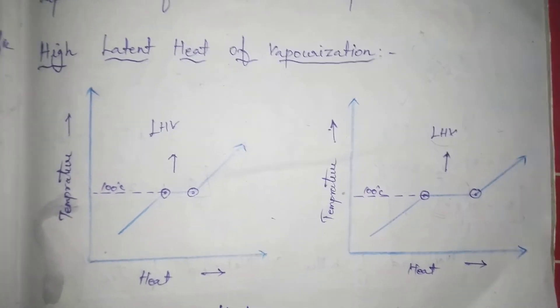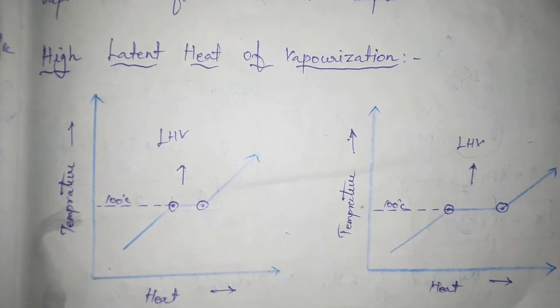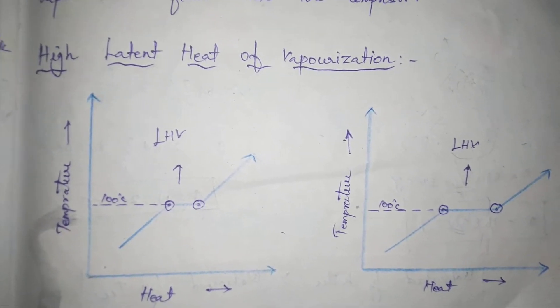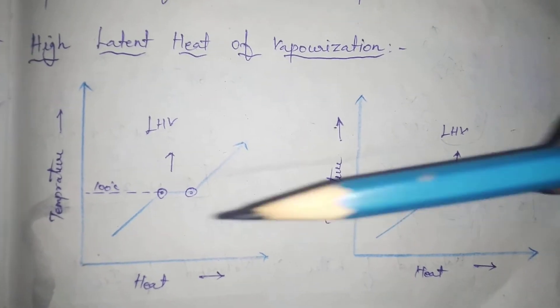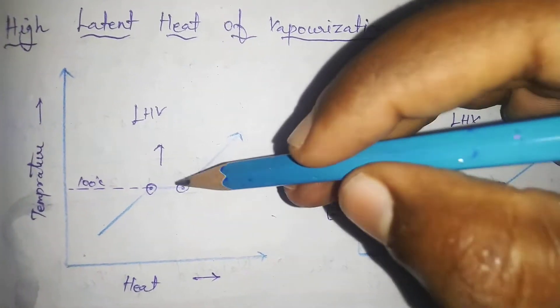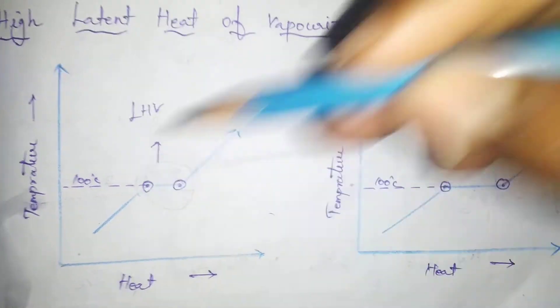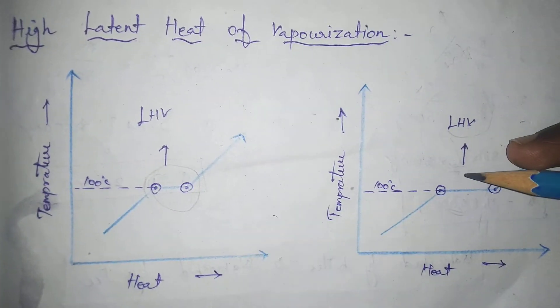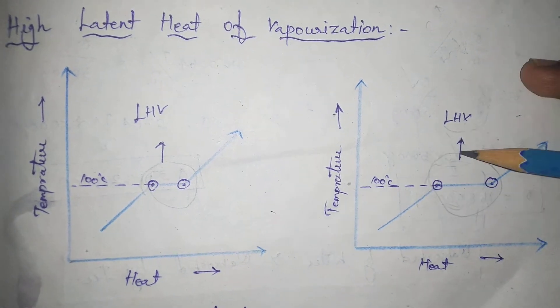We are comparing two cases: high latent heat of vaporization versus low latent heat of vaporization. I will show two graphs. In one liquid, the latent heat of vaporization is very low, and in another liquid, the latent heat of vaporization can also be small.